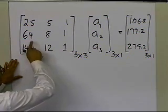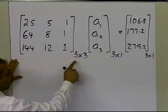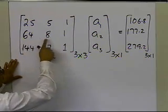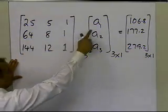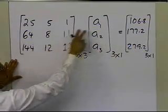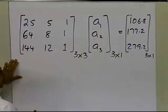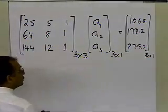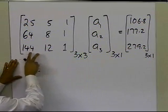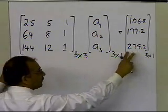Same thing here, if I want to find the second row, first column of the resulting matrix here, I get 64, 8, and 1 will be multiplied by A1, A2, and A3 as a dot product, so I'll get 64 times A1, plus 8 times A2, plus 1 times A3, equal to 177.2. Same thing, the last row, I'll get 144 times A1, plus 12 times A2, plus A3, is equal to 279.2.